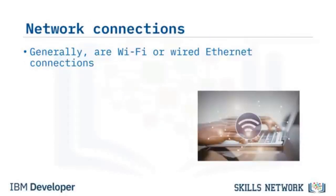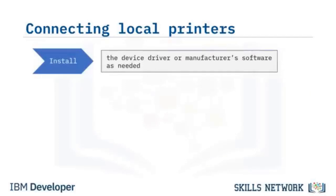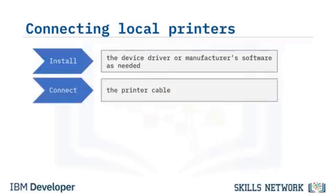Peripheral and printer network connections can be wireless using Wi-Fi, or wired using an Ethernet connection. Before adding a connection to a network-based peripheral, verify your connectivity. To connect and install a printer using a serial or parallel port: if needed, locate and install the driver or software using the manufacturer's instructions. Next, locate the serial port or parallel port on your computer — serial port cables usually have 9 pins, parallel ports have 25 pins. Attach the cable connection to the computer's port using the side screws, then power on your printer and configure the printer.